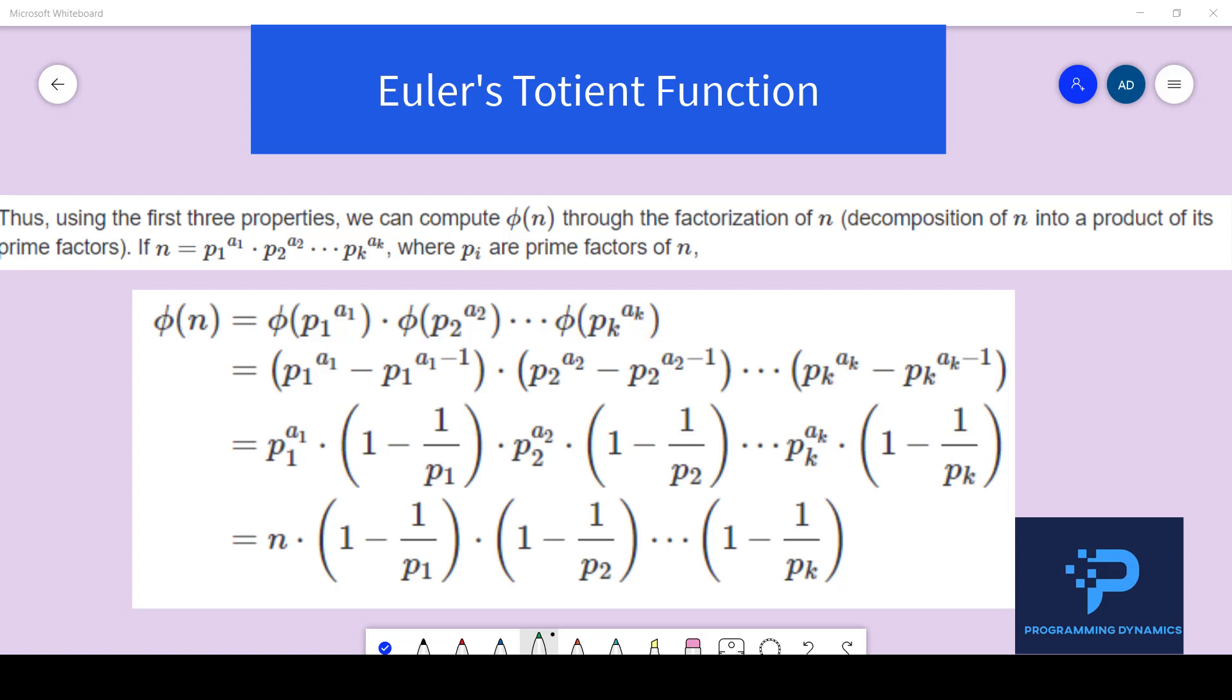Then we can write phi of n as phi of p1 to the power of a1 times phi of p2 to the power of a2 times phi of pk to the power of ak. Now this follows directly from the third property which we discussed and we can substitute all the pi to the power of ai using the second property. So then our equation will become p1 to the power of a1 minus p1 to the power of a1 minus 1 times p2 to the power of a2 minus p2 to the power of a2 minus 1 and on simplification we get the final equation as phi of n equal to n times 1 minus 1 by p1 times 1 minus 1 by p2 times 1 minus 1 by pk.